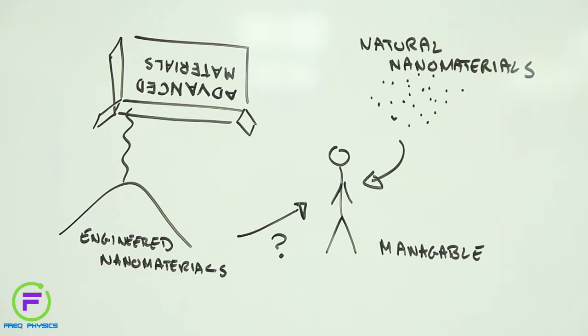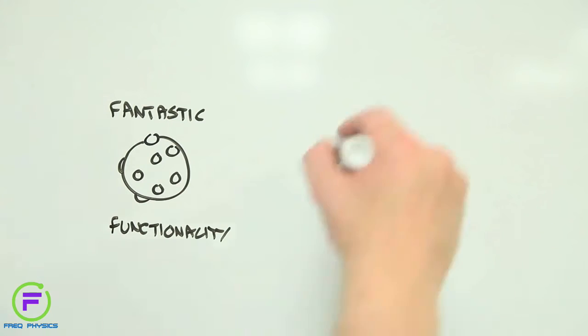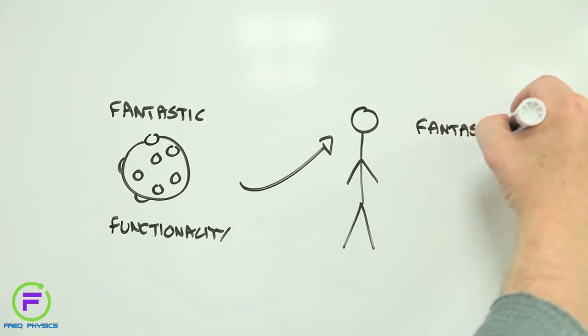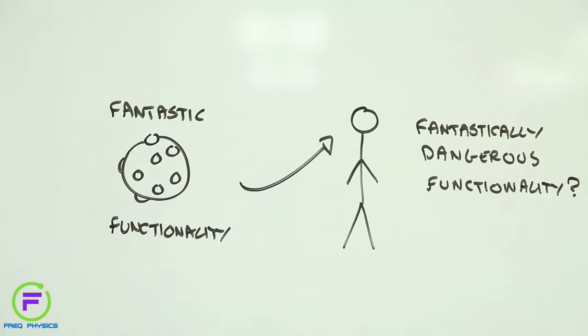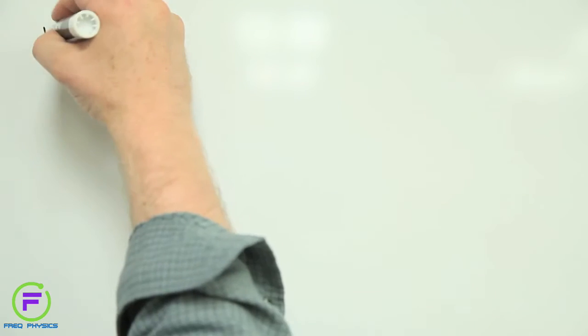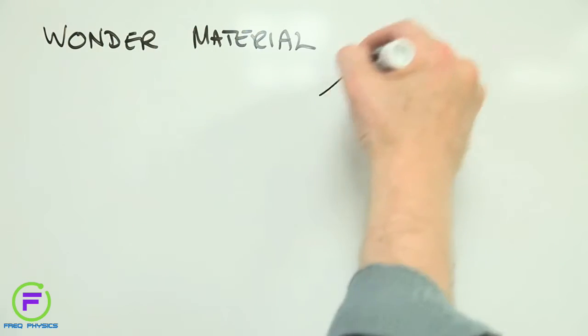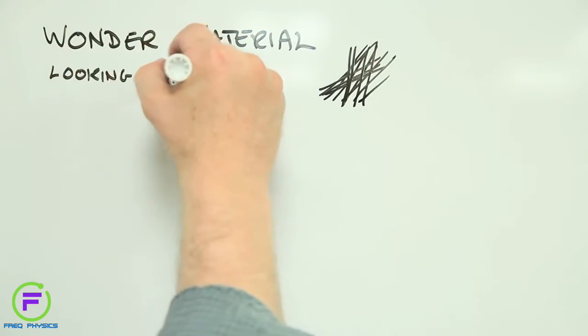And what happens when something that has been designed to speed up chemical reactions or be part of a super strong material or to convert one form of energy into another gets into our body? Do these unique and unusual properties also lead to unique and unusual risks? If advanced materials are going to be as useful as we think they could be, these are really important questions.